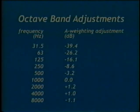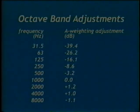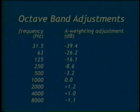This is the A-weighting plot in tabular form for octave bands. For the 125 hertz octave band, a negative 16.1 dB adjustment should be applied. The 500 hertz band requires a negative 3.2 dB adjustment. The 1,000 hertz band, which can be thought of as the reference frequency for A-weighting, has no adjustment. And the 2,000 hertz band requires a positive 1.2 dB adjustment in sound pressure level.